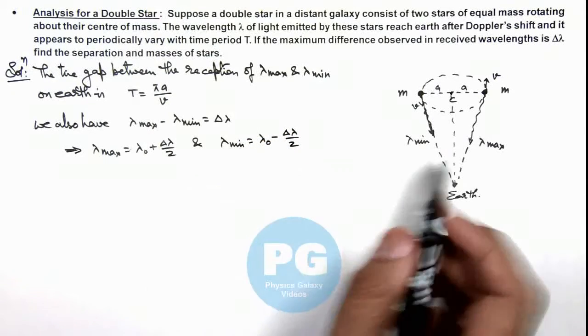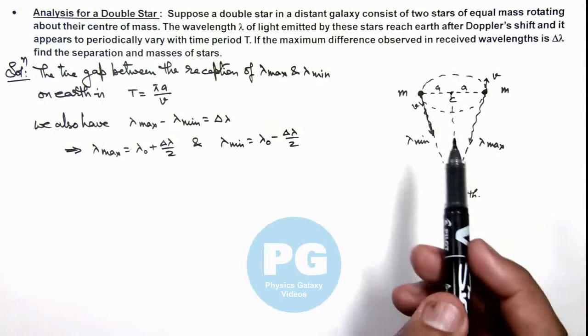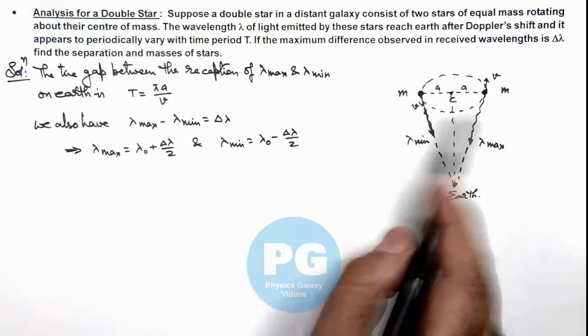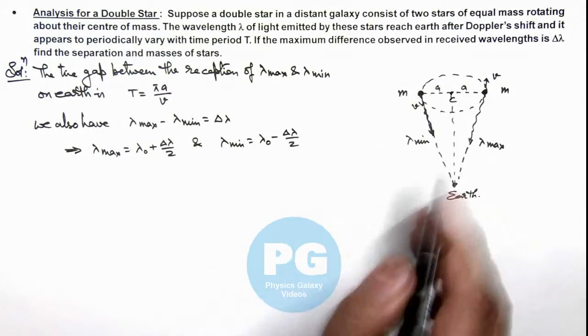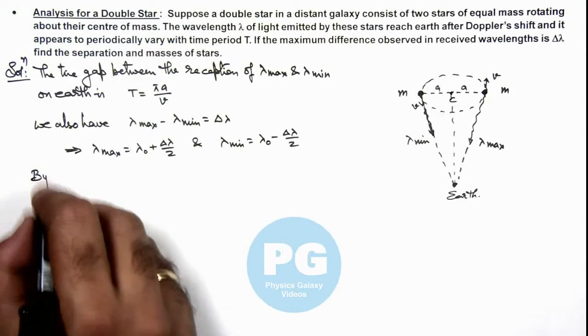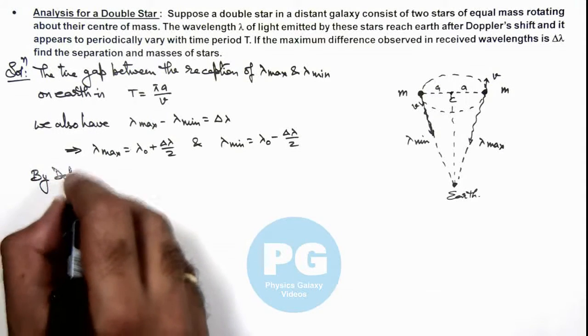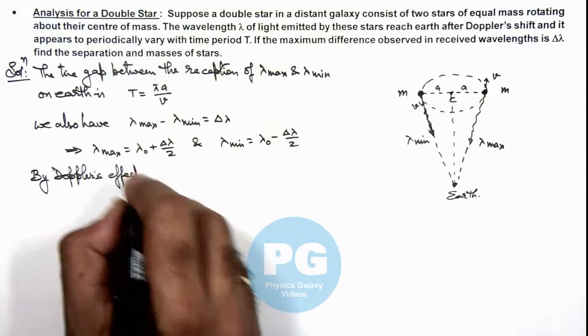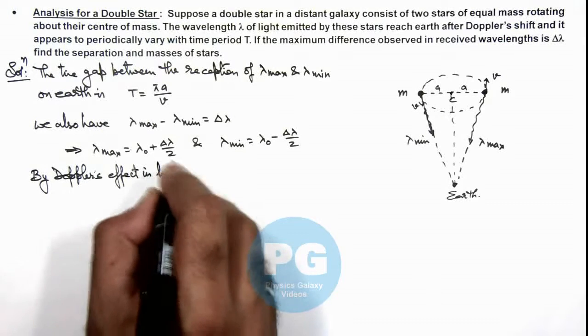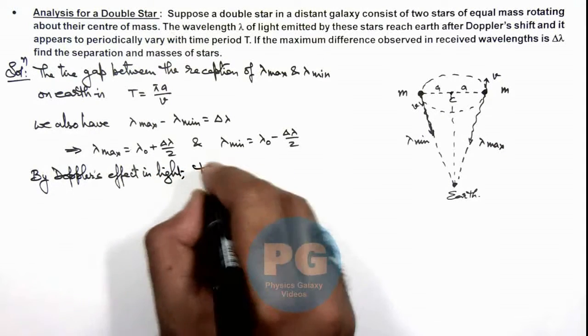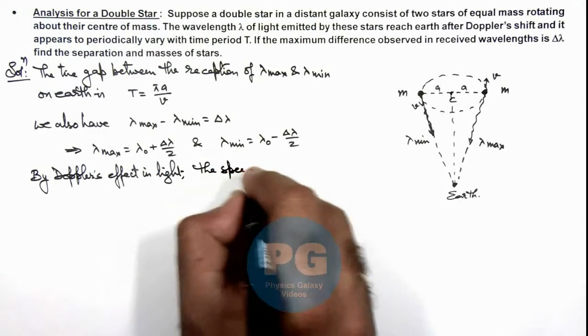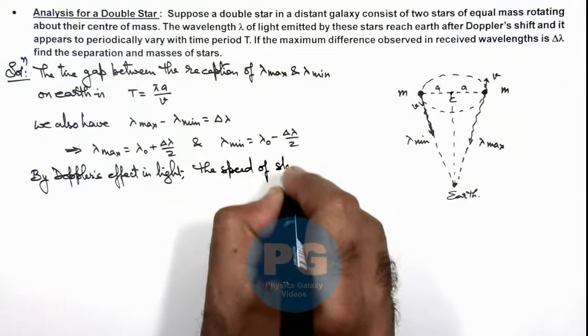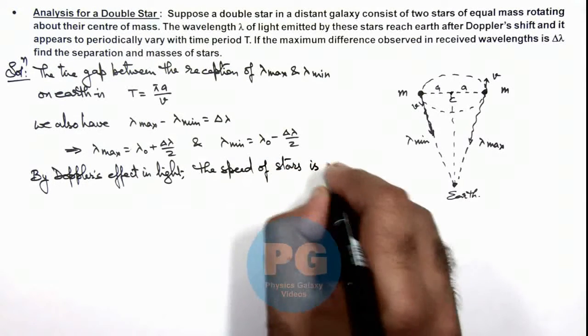Where λ₀ is the mean or actual wavelength of light which the stars are emitting. So we can directly write by Doppler's effect in light, the speed of stars is given as: